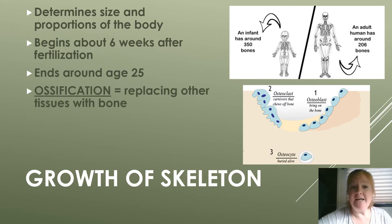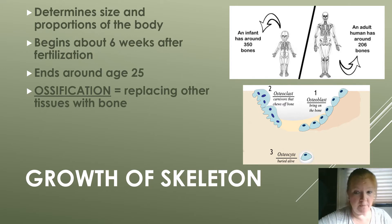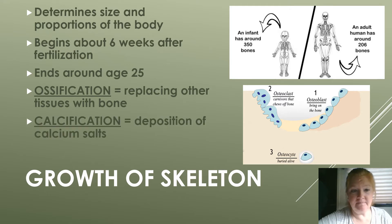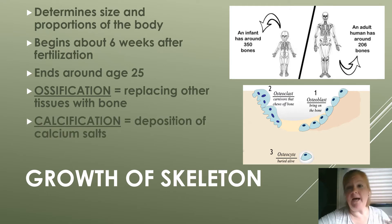Ossification is replacing other tissue with bone — that's how growth happens. Calcification is depositing calcium salts to give the bone its strength.